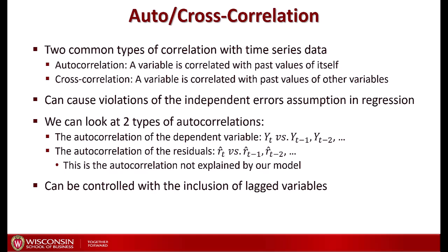These correlation patterns can both cause violations of the independent errors assumption used in regression. To check for autocorrelation, there are two approaches: first, look at the autocorrelation of the dependent variable Y across time lags; or, after running a regression, examine the autocorrelation of the residuals. Residual autocorrelation represents what is not explained by the model. Autocorrelation can usually be controlled with the inclusion of lagged variables, and choosing which lagged variables to use is more an art than a science.